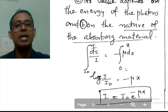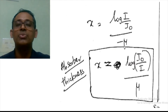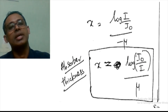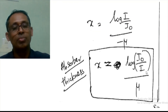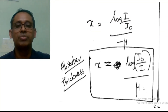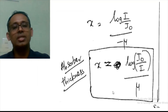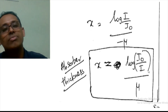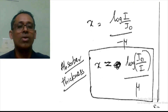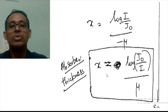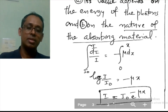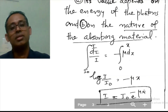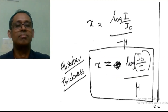From this equation, we can write x = ln(I₀/I) / μ. This allows us to calculate the absorber thickness required for the intensity to fall from I₀ to I. So x = ln(I₀/I) / μ is the equation to calculate intensity as the beam travels through distance x.